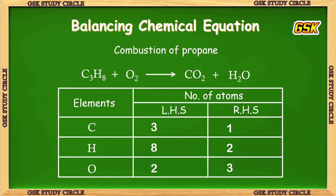The number of atoms of each element is different on LHS and RHS. We should make them equal so that it satisfies the law of conservation of mass — when atoms balance, mass also balances. So we should make atoms balance.